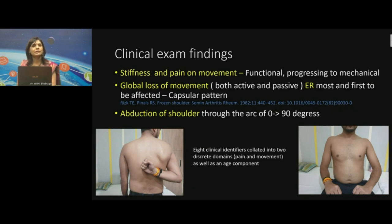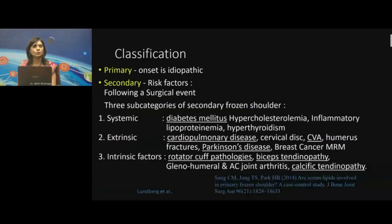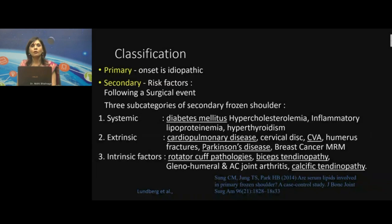The most widely used clinical classification was presented by Lundberg and Wohl, who classified the condition as primary, when a clear cause could not be established, and secondary, when adhesive capsulitis occurred after a definite history of injury or surgery, or under the subcategories of systemic, extrinsic, or intrinsic causes. The commonest predisposing factors include diabetes, fractures, and rotator cuff pathologies.